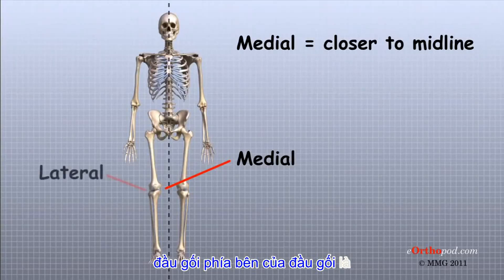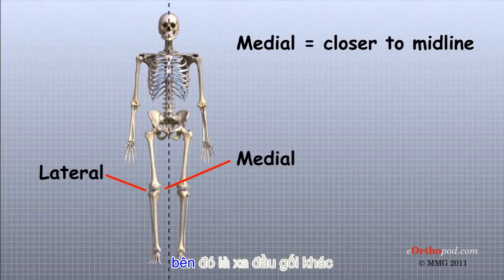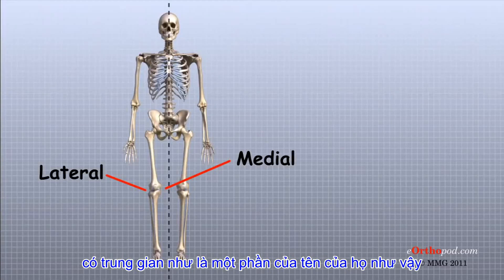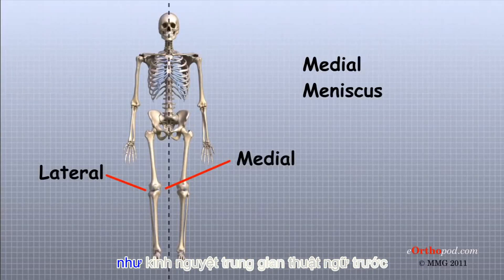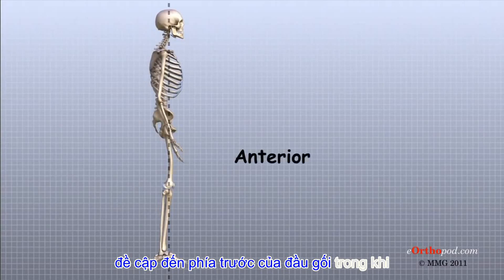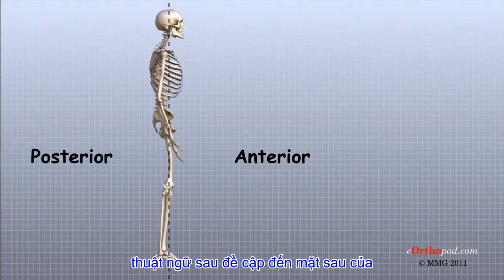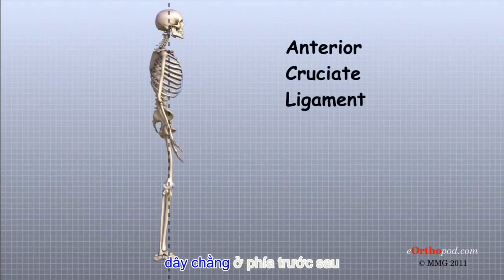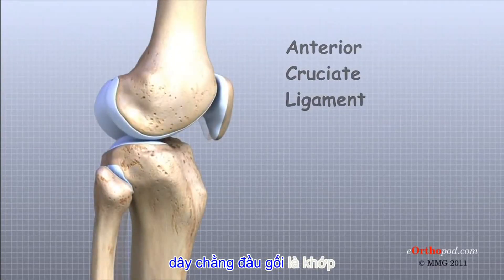The lateral side of the knee is the side that is away from the other knee. Structures on the medial side usually have medial as part of their name, such as the medial meniscus. The term anterior refers to the front of the knee, while the term posterior refers to the back of the knee, so the anterior cruciate ligament is in front of the posterior cruciate ligament.